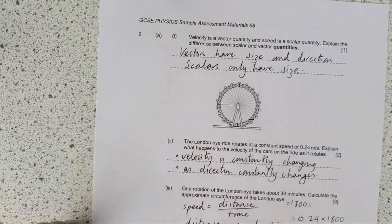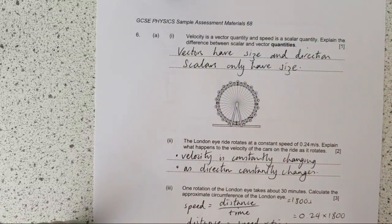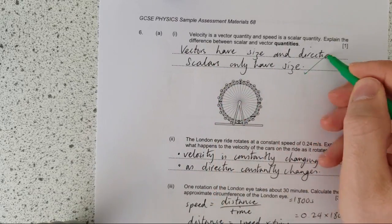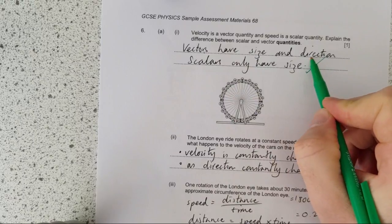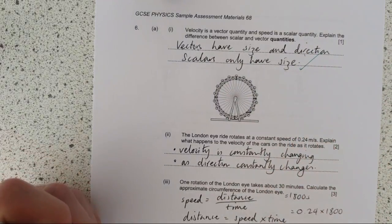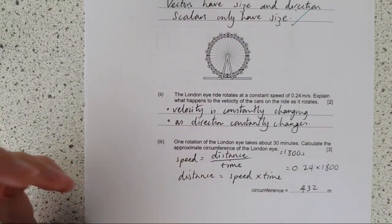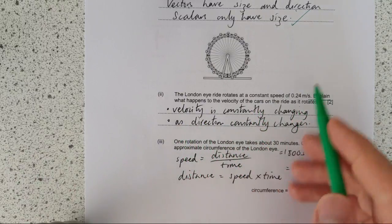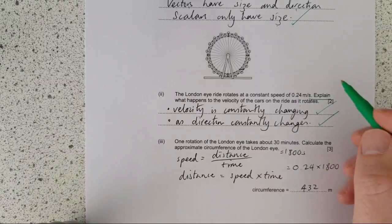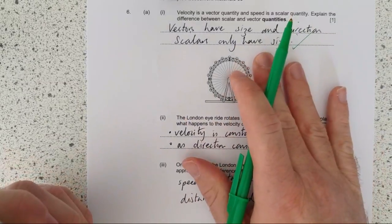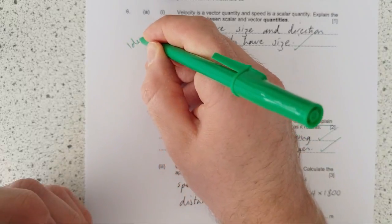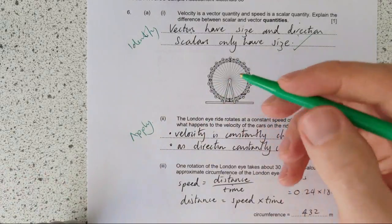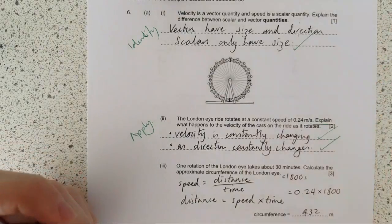This one here, vectors and scalars. Velocity is a vector quantity and speed is a scalar quantity. Explain the difference between scalar and vector quantities. Vectors have size and direction. Scalars only have size. Something that indicates vectors are different because they've got direction as well as size. In London, I rotate a constant speed of 0.24 meters per second. Explain what happens to the velocity as the cars on the ride rotate. Well, velocity is constantly changing as direction is constantly changing. So this is identify something you know about vectors and scalars, and this is apply.